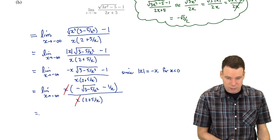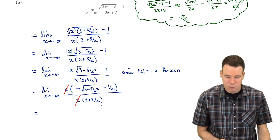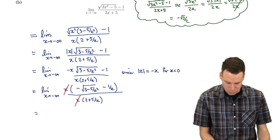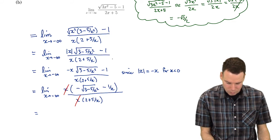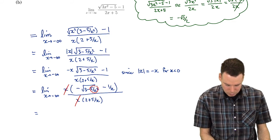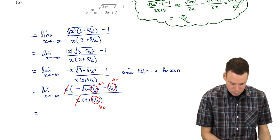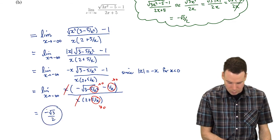As x goes to negative infinity, as x gets really big in the negative, well everywhere an x appears in the rest of my expressions, it's always on the bottom of that corresponding term. 5 over x squared, 1 over x, 5 over x, those are all going to go to 0. So this is going to go to 0, this is going to go to 0, and this is going to go to 0. So what's left is just a negative square root of 3 over 2. There's our answer. Notice it agreed with our thought process above.